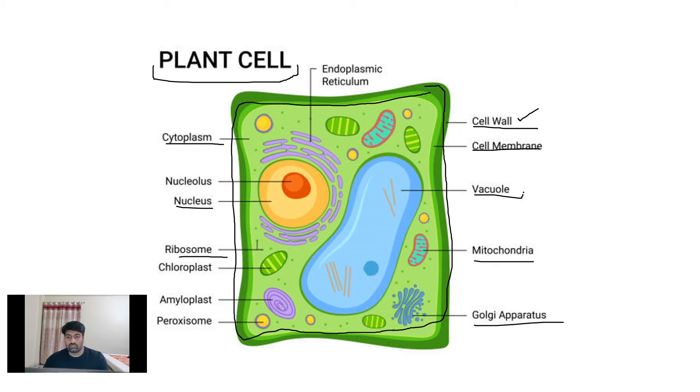Next structure is vacuole. In animal cells, large number of small size vacuoles are present. But in plant cells, less number of vacuoles are present, which are large in size, like we can see here. This vacuole has taken up most of the space of plant cells.